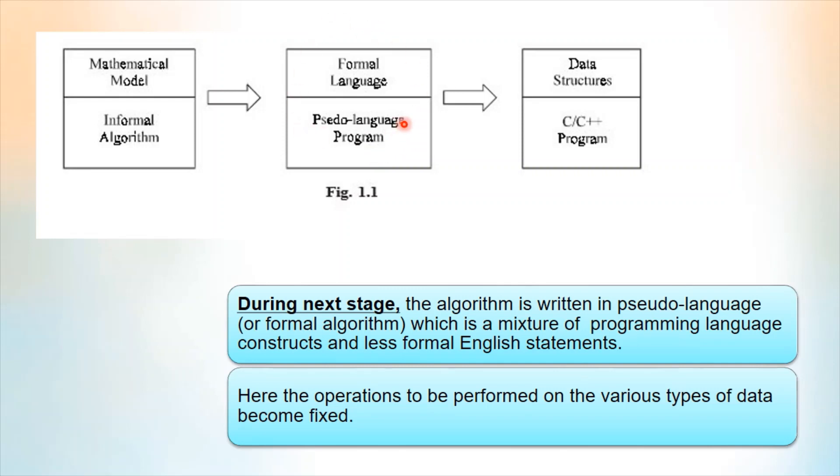In the next stage, the algorithm is written in a formal language, and it will be a mixture of a programming language and some English statements. This is the second stage, and in the second stage, the operations to be performed on data will also be determined.